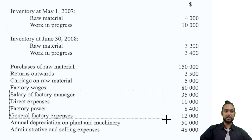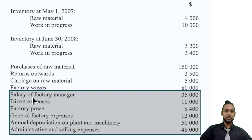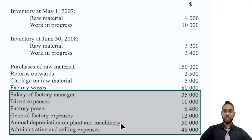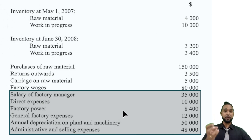There are a few other items: salary of factory manager, direct expenses, factory power, general factory expenses, annual depreciation on plant and machinery, and admin and selling expenses. The admin and selling expenses will not go in the manufacturing account — that will go in the income statement if we are doing one. Remember, the manufacturing account records only manufacturing or production costs.